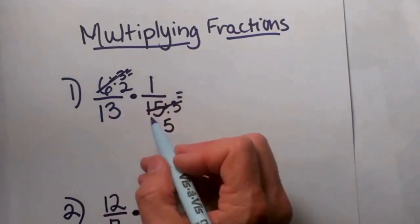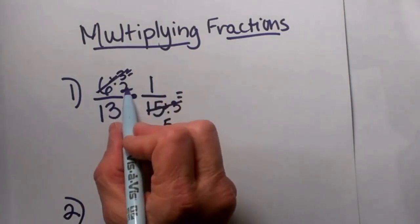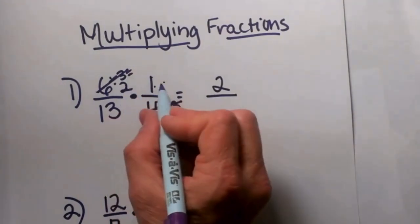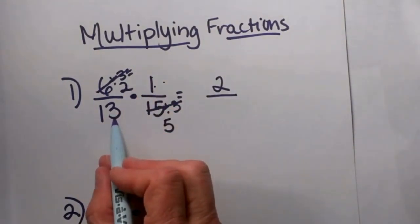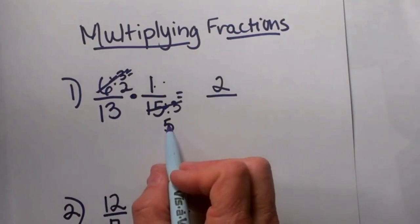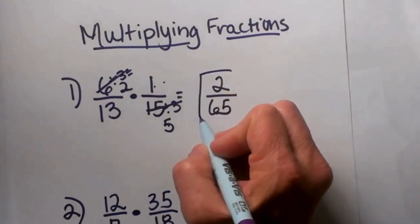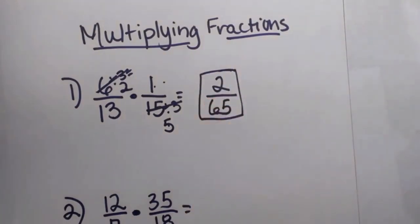Now I have no other common factor, so let's multiply across. 2 times 1 is 2. So you multiply the numerators together and multiply the new denominators together. 5 times 13 gives me 65. So 2/65 is my final answer.